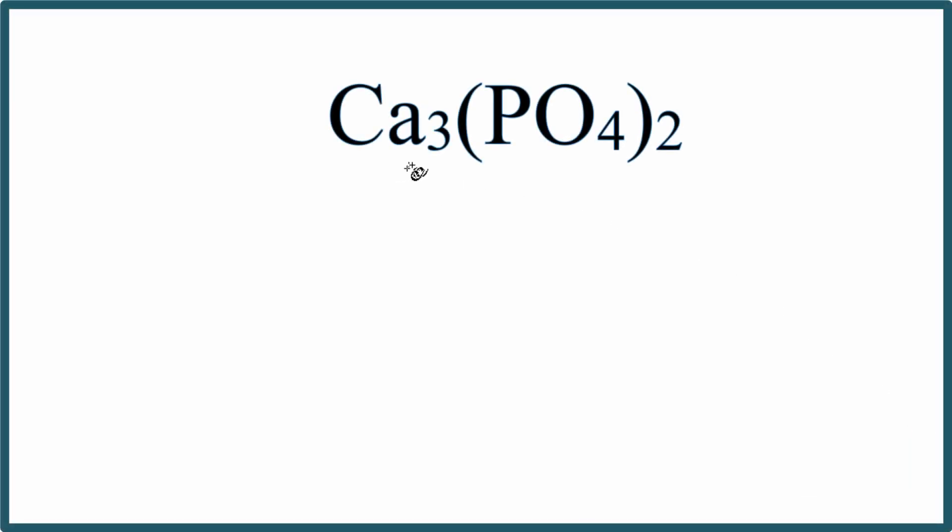To write the number of atoms in Ca3(PO4)2, that's calcium phosphate, let's write down each atom. So we have calcium, phosphorus, and oxygen. Those are the three atoms.